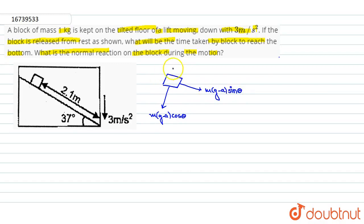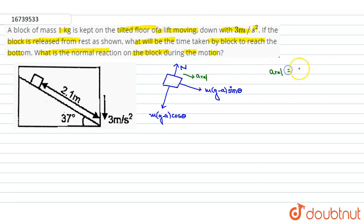And here we have the normal direction, which will be N. If we look at this, we will consider acceleration relative to the incline. The relative acceleration will be (g minus a).